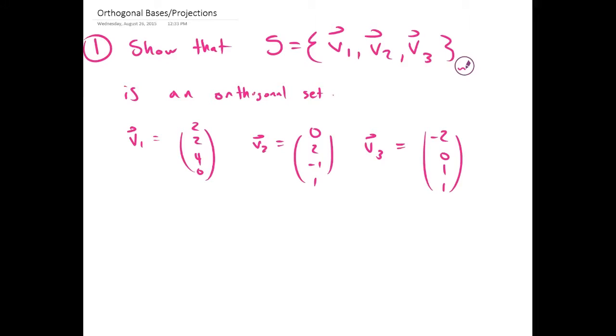I'm going to do some examples for orthogonal bases and projections. So our first example asks us to show that S, which is the set of V1, V2, and V3, is an orthogonal set.